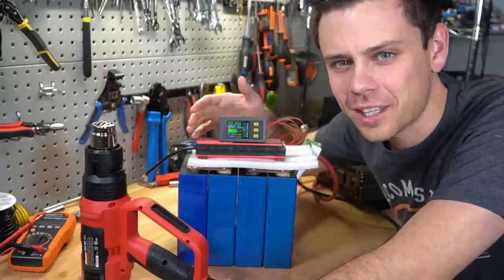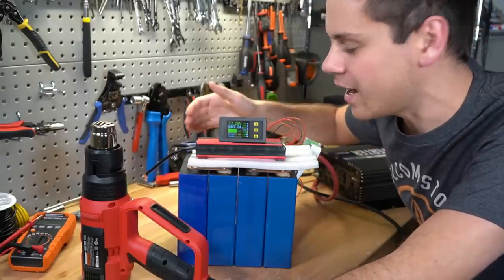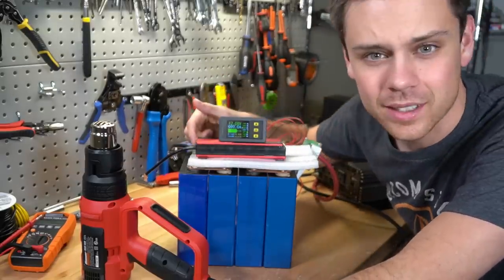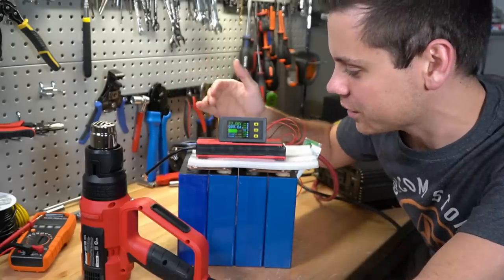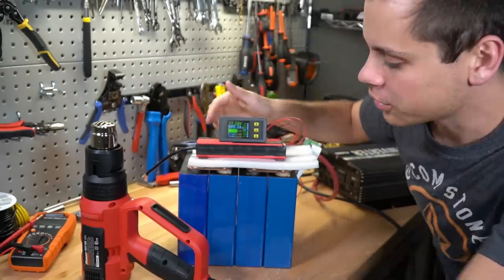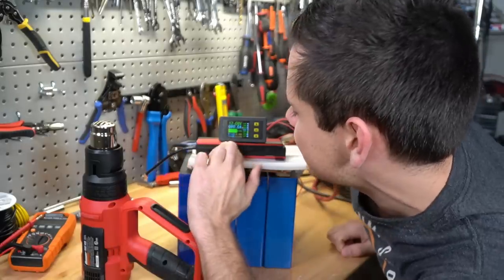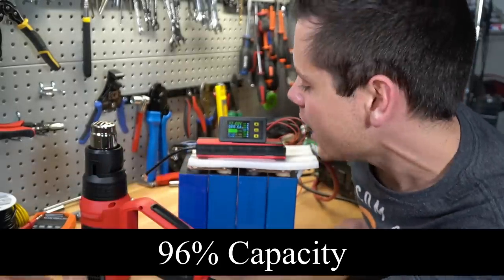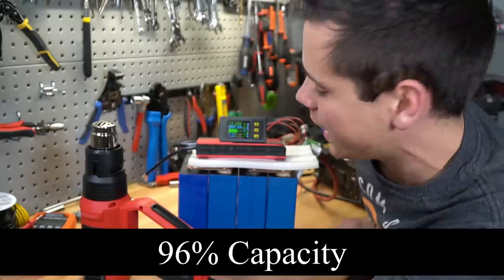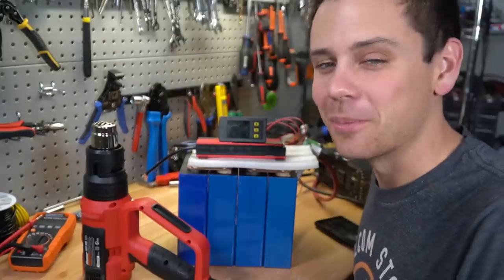So it actually failed the capacity test, you guys. It's not disconnecting at the inverter. It's the BMS that's disconnecting because one of the cell's voltages is too low. So that means that these cells are not matched. And we only got 116 amp hours. That's pretty close to be fair, but it is not 120 amp hours. So yeah, you get what you pay for.